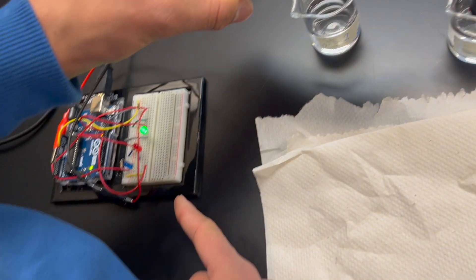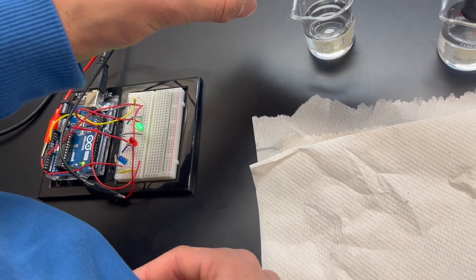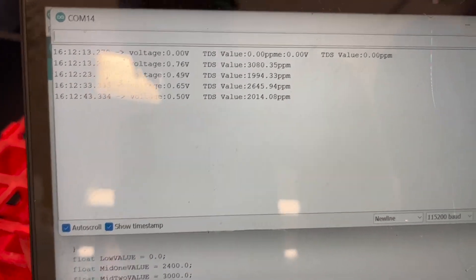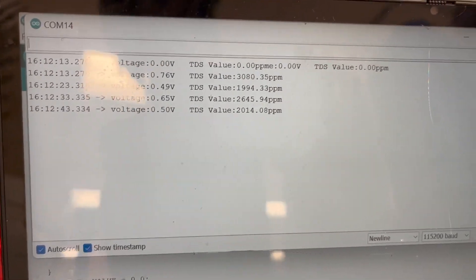Show the color. It's green. Yeah, so here's the green. We're getting 0.65 volts and 26... Okay. So 0.65 volts and 2645.94 ppm.